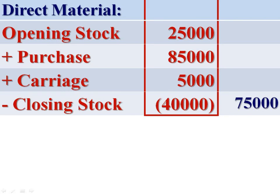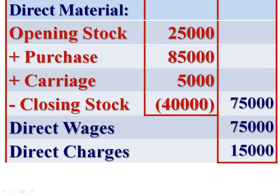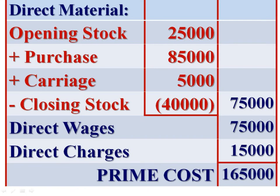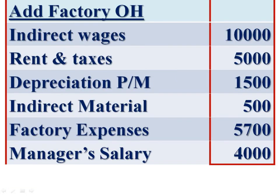Now prepare the cost sheet. Opening stock plus purchases plus carriage inward minus closing stock gives material consumed, which is direct material. Then we are given direct wages and other direct charges — adding these three items we get prime cost. Then add factory overhead: indirect wages, rent and rates, depreciation of plant and machinery, indirect material, factory expenses, and manager's salary of Rs 2,500.